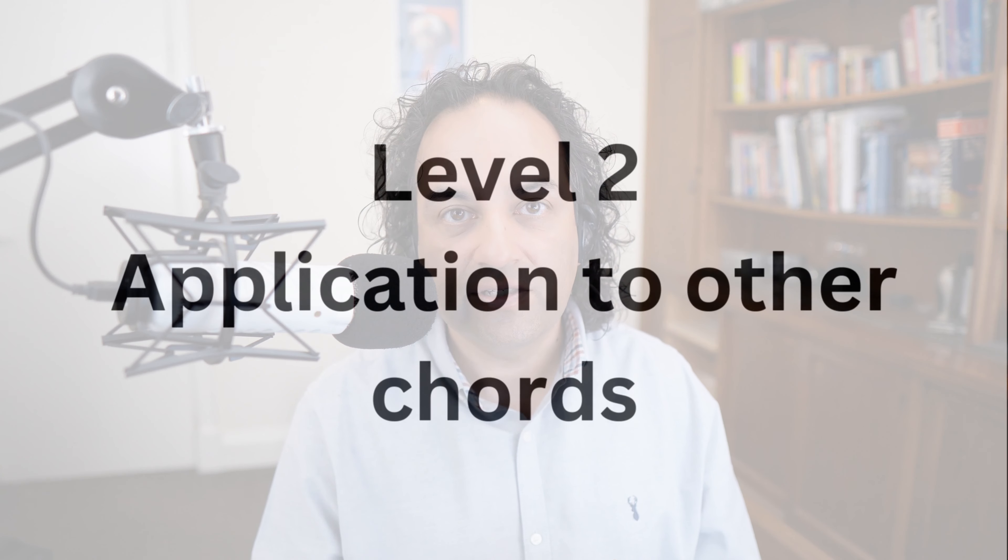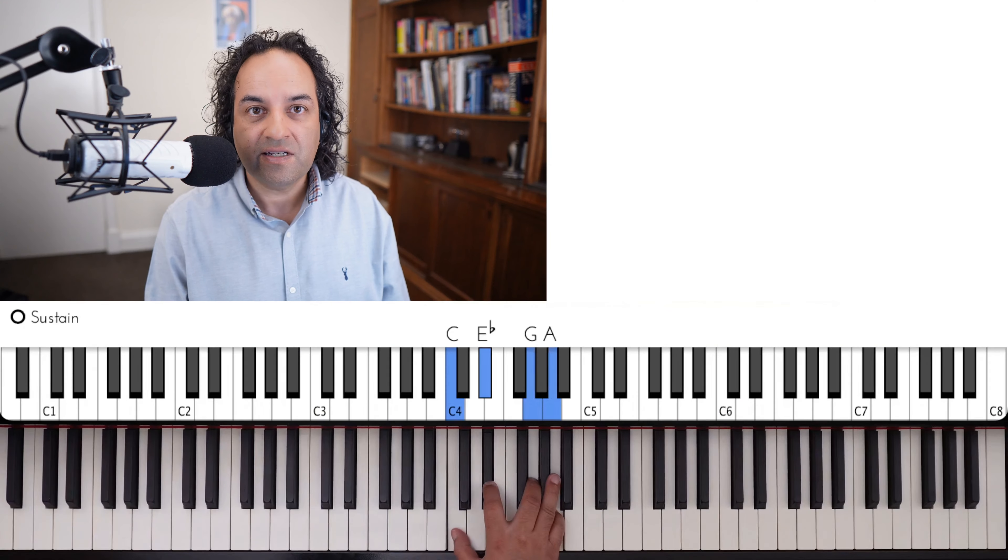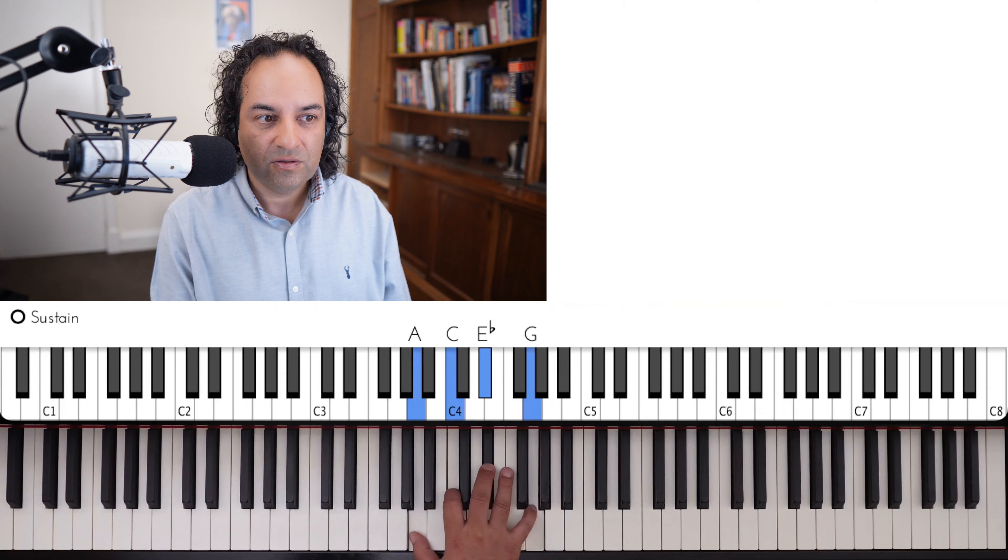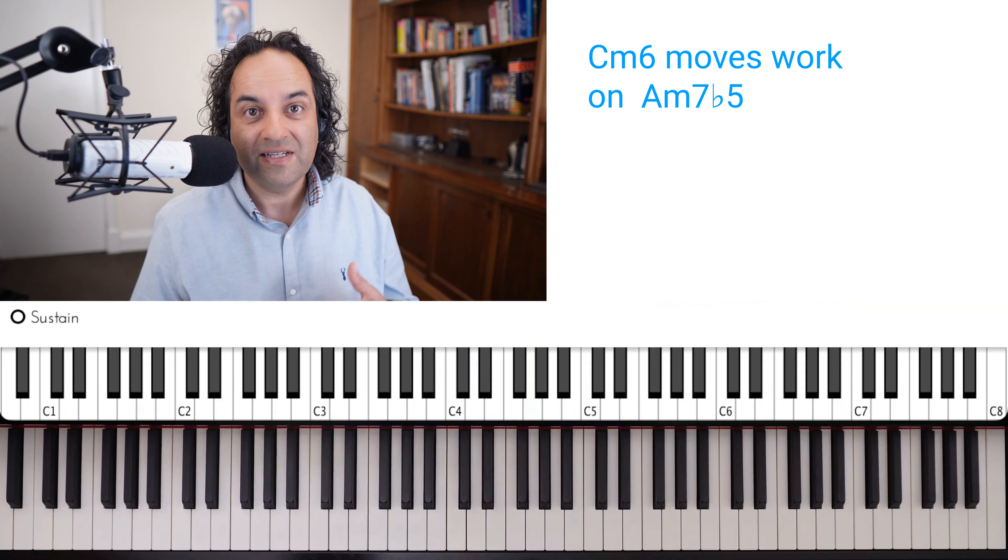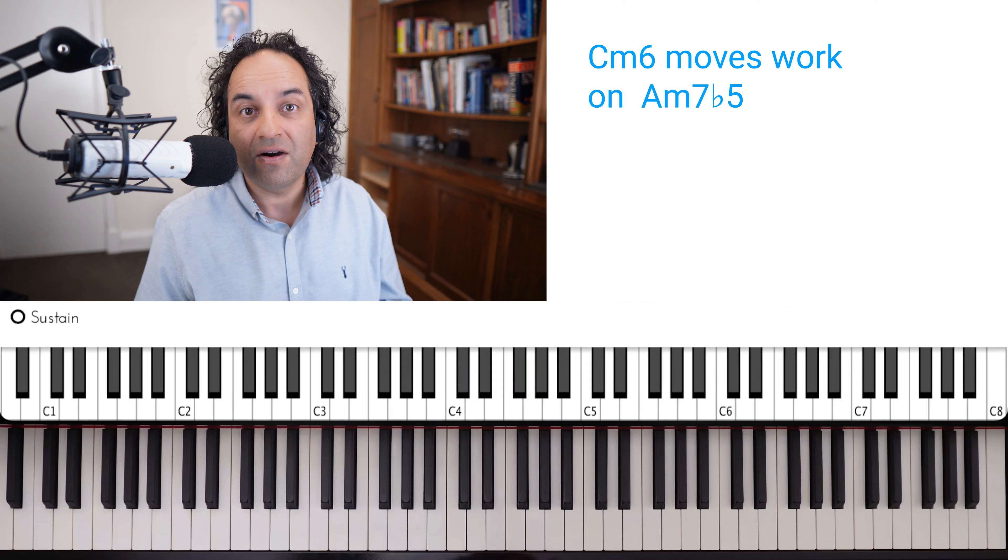Level two. Now what we're going to do is take the same kinds of things but we're going to apply them to more chords. So that C minor 6 as we mentioned in level 1 is also an A minor 7 flat 5 inverted. Or A half diminished. So the great thing about this method is that all the things we do on C minor 6 also apply to A minor 7 flat 5 in terms of movement.